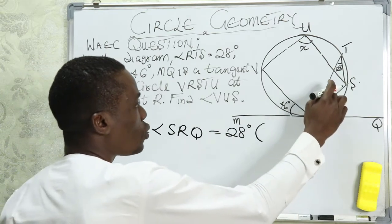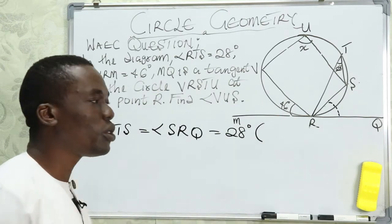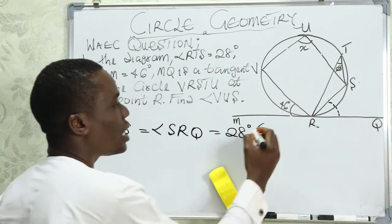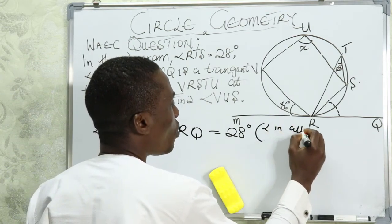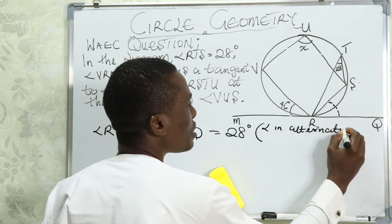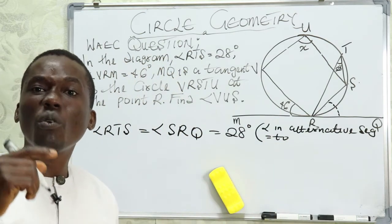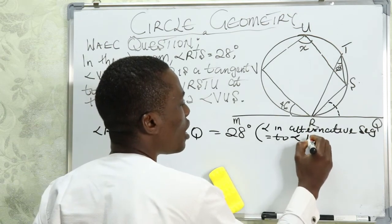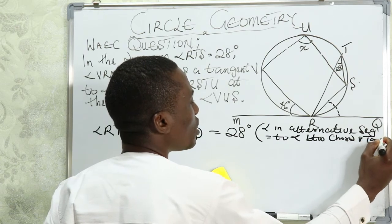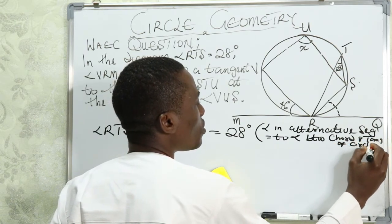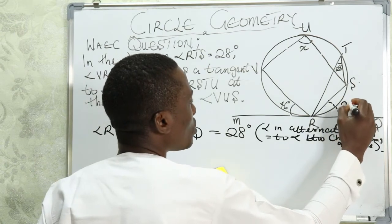The reason is: the angle in an alternate segment is equal to the angle between a chord and a tangent to a circle. When answering a question like this, you must write the reason — stating that the angle in the alternate segment is equal to the angle between the chord and the tangent of a circle. So this angle is now 28°.